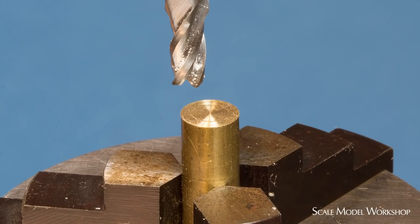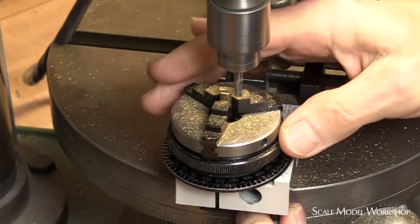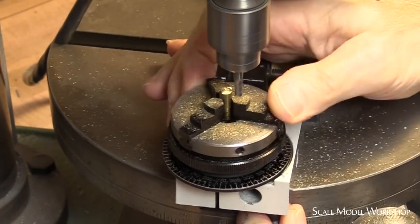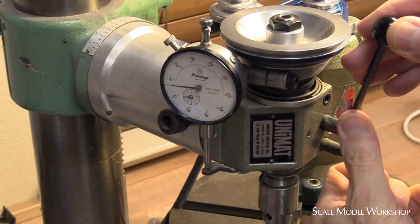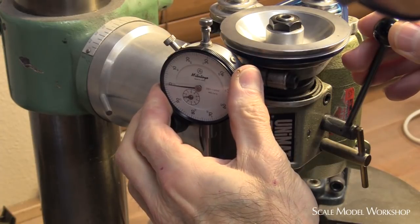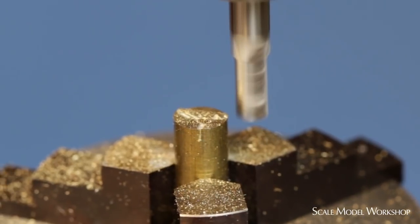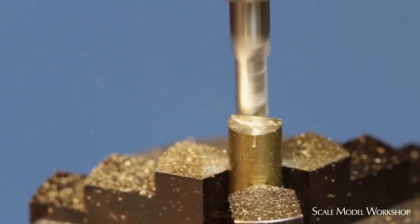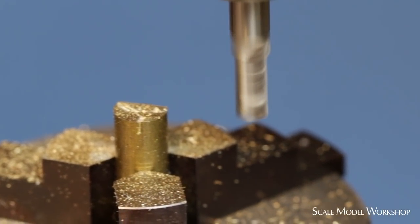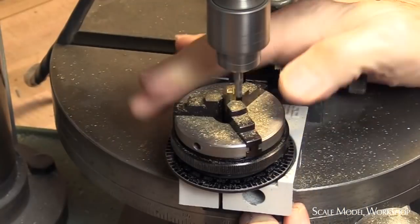The brass rod is chucked in an indexing head that allows for precise incremental rotation. The preliminary depth is set. The milling process involves the rotation of the material so that there is an equal amount removed from both sides.